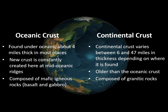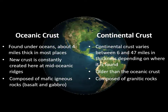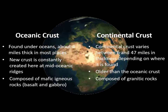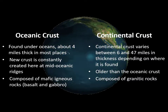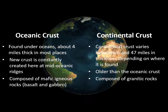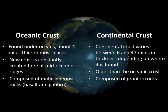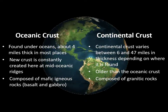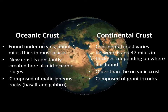Oceanic crust is found under oceans and is about four miles thick in most places. The continental crust varies between 6 and 47 miles in thickness depending on where it is found. The thickest continental crust is found beneath mountain ranges such as the Himalayas.